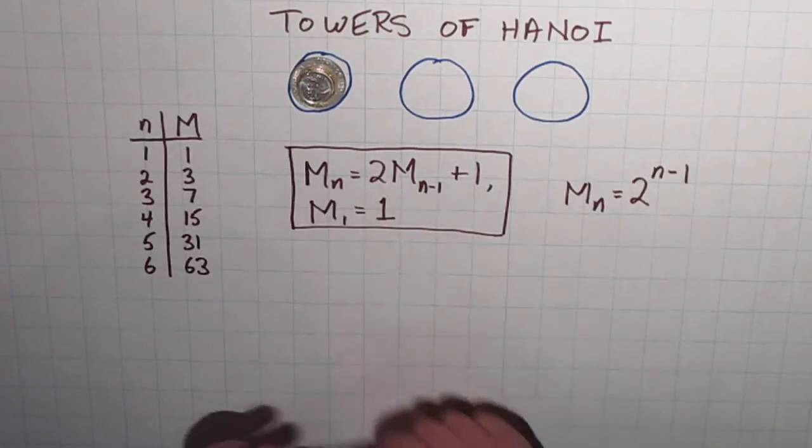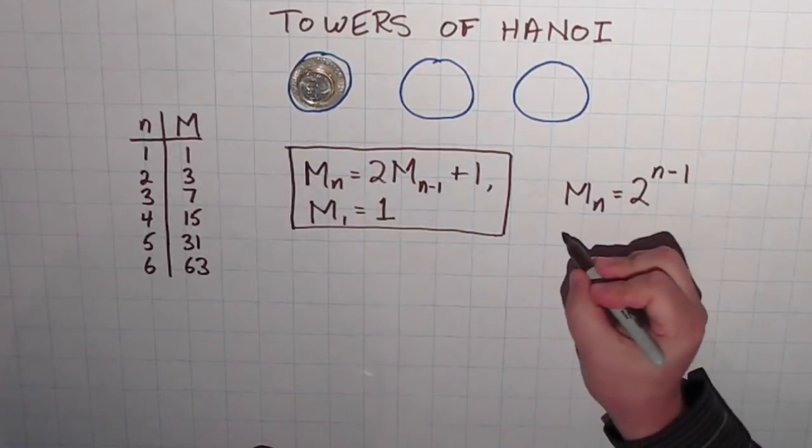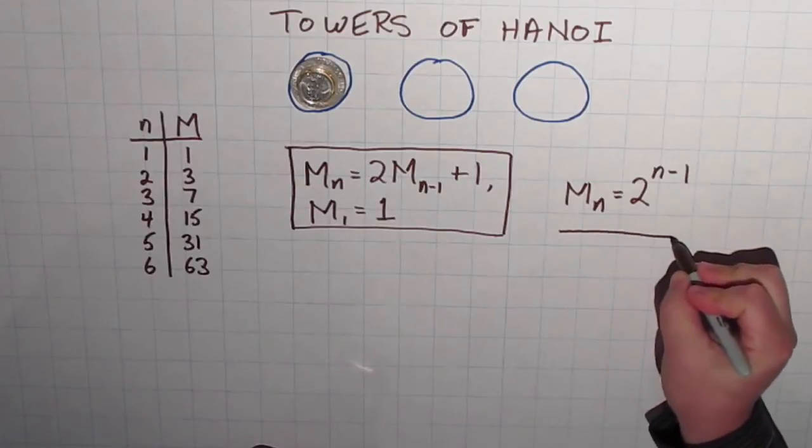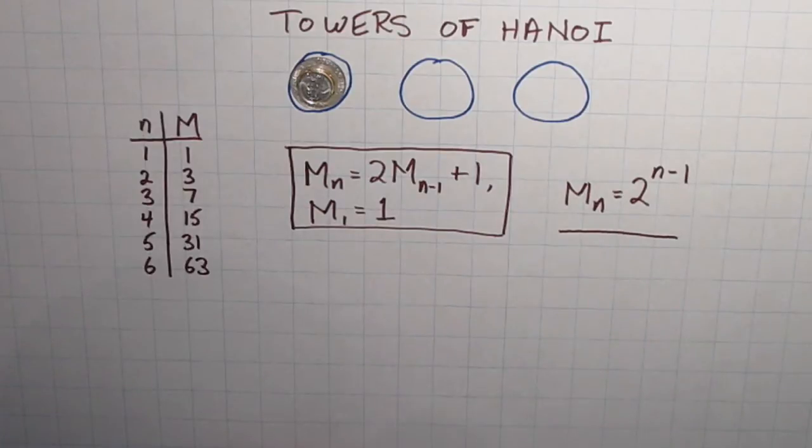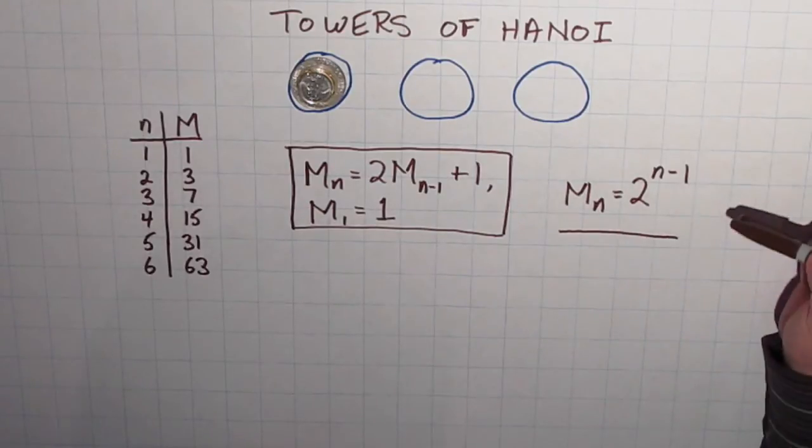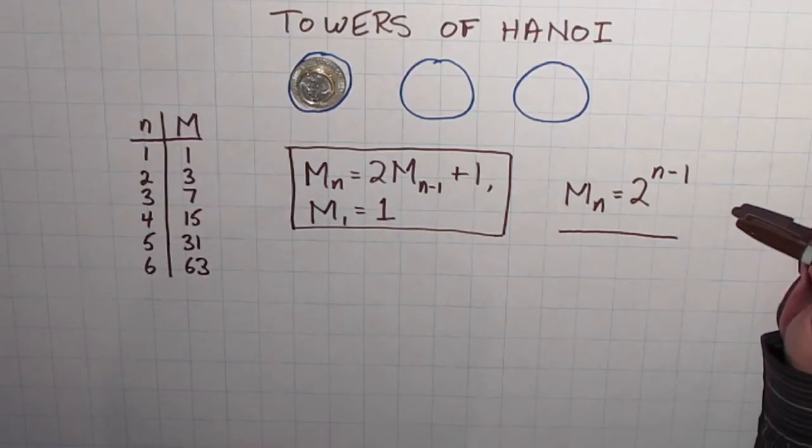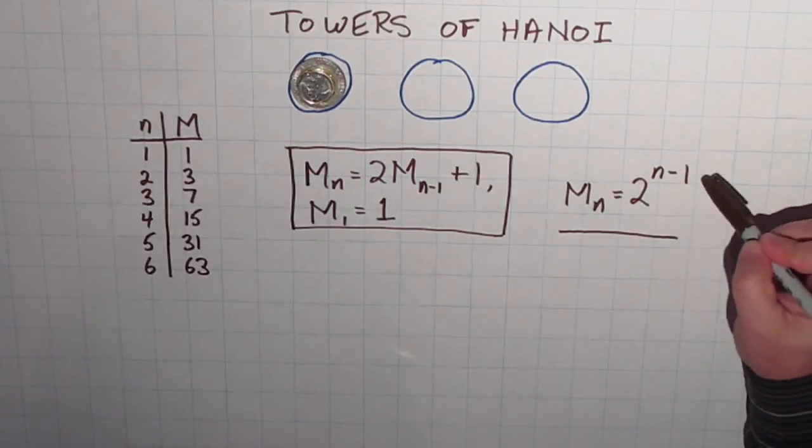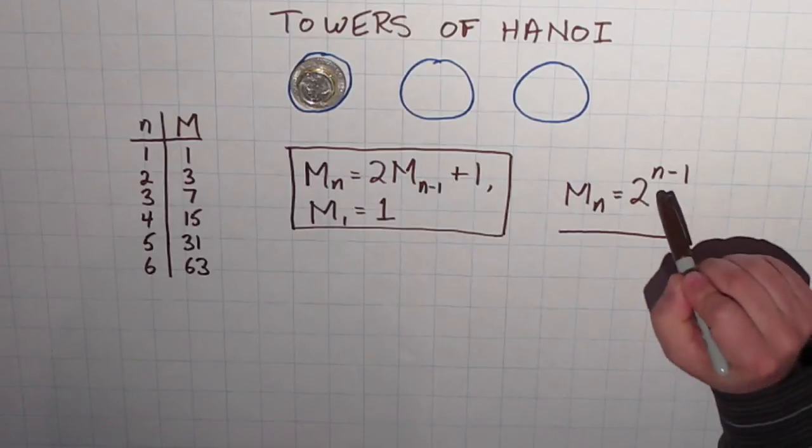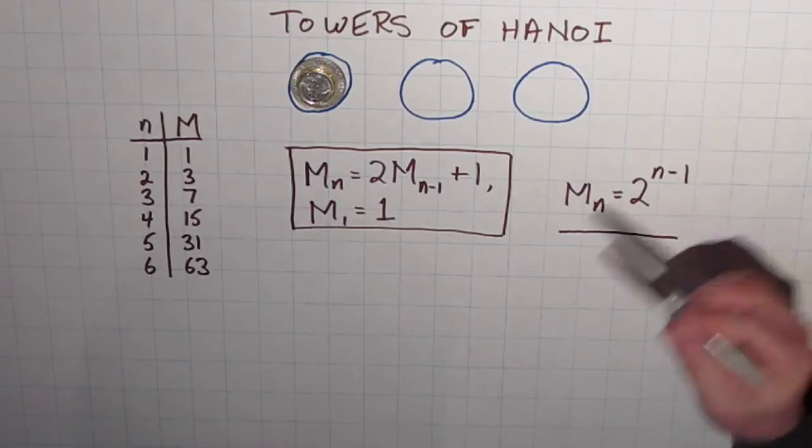But in looking at these numbers, we discovered a second pattern, which seems to be working. And it's not a recursive formula, it's what we call a general formula, because it's not defined in terms of previous terms, it's just a straight-out formula. You put the number of coins in for the n and work it out.